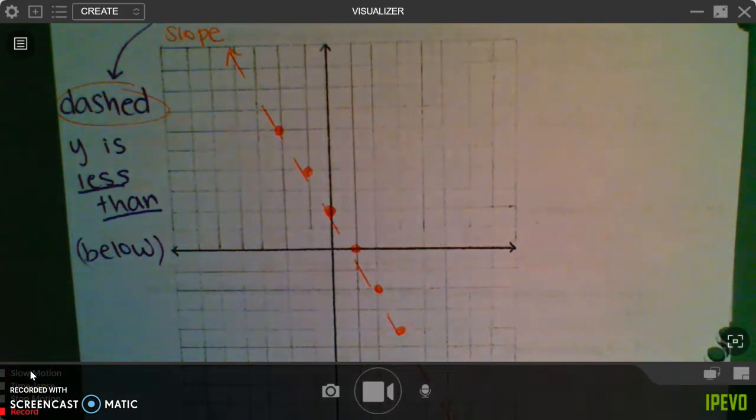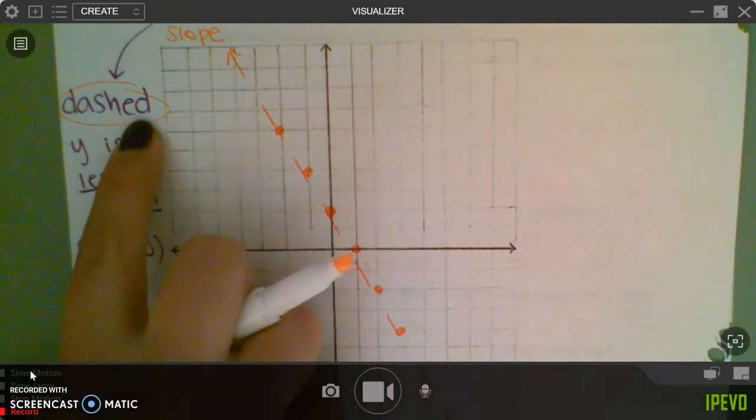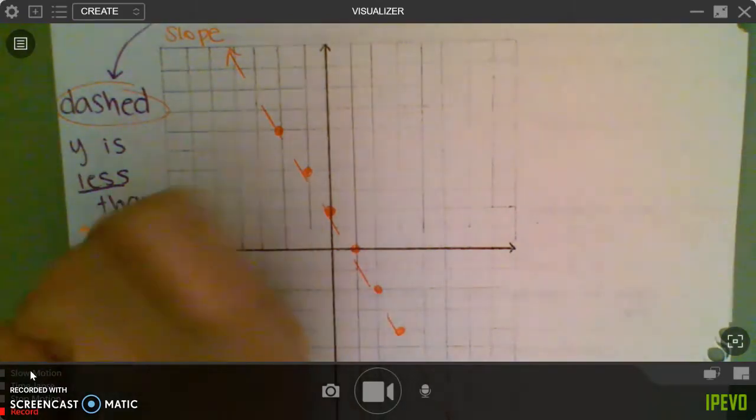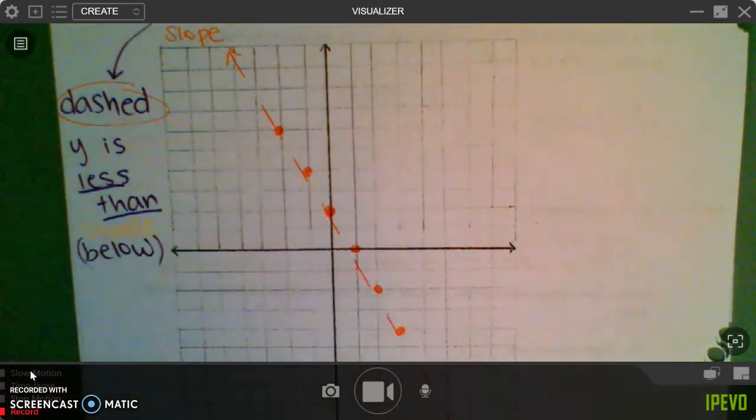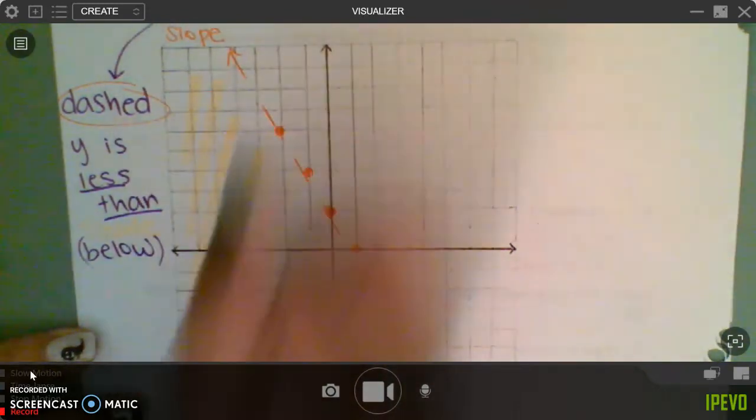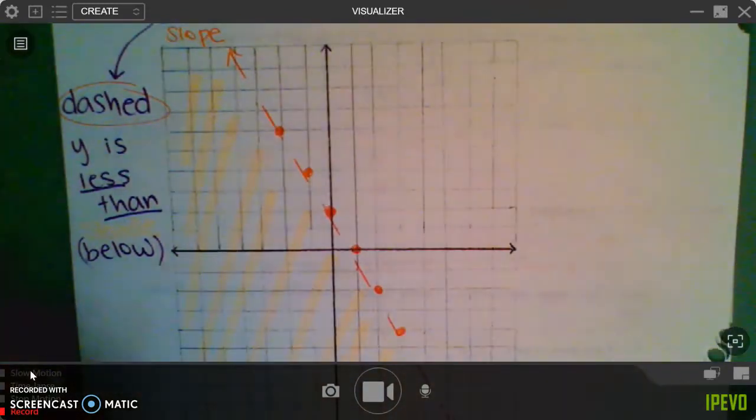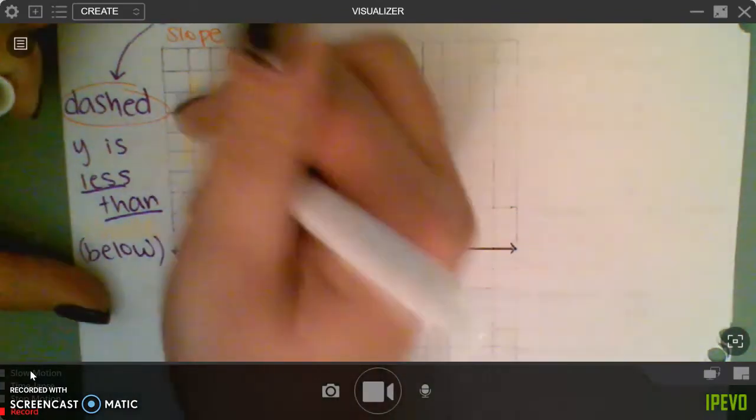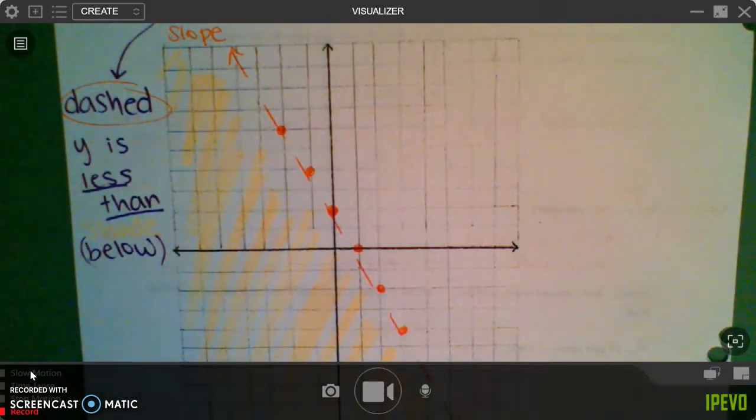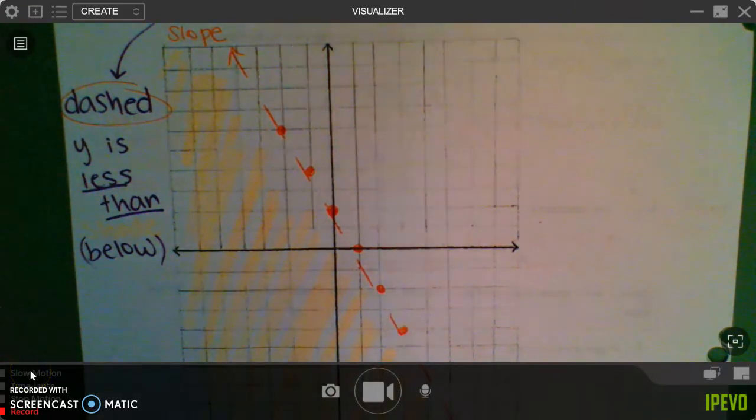So at this point, we're almost done. We have drawn our line, we've made sure it's dashed, but with inequalities, you also have to shade. So for this one, we are shading below, which means I'm going to shade on that side. All of those numbers are below the graph. But let's say you get stuck, and you're like, but Ms. Yeager, I don't know which way to shade. You're going to pick a point. I like to use zero, zero.